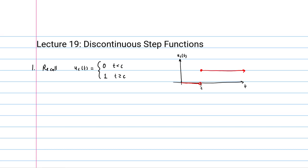As c varies, the place where the step is taken in the t direction changes — c is a parameter for this function. Otherwise, the graph of this function will always look like this.